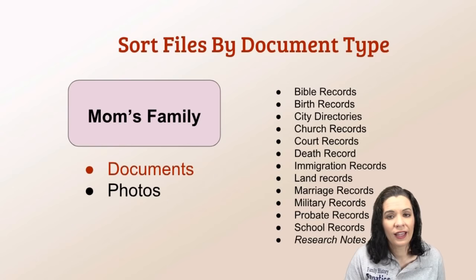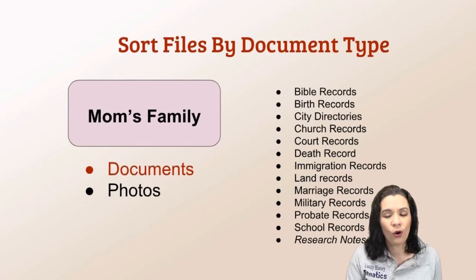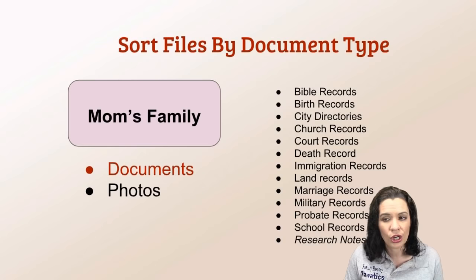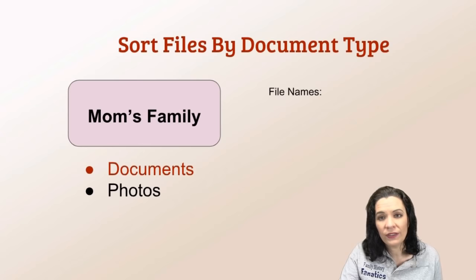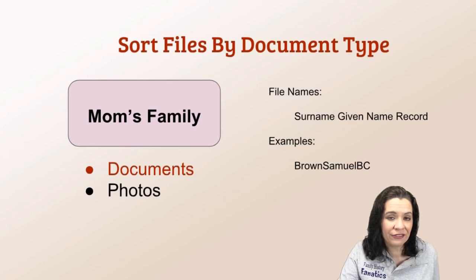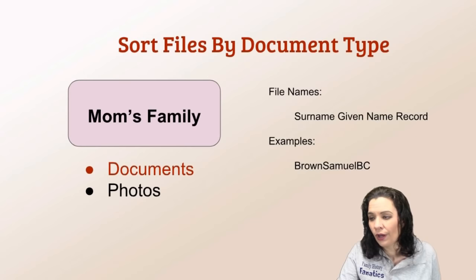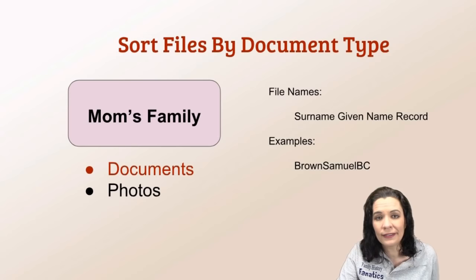Within the documents folder — under both mom's and dad's branches — I have subfolders by record type. So all the birth records are together, all the church records together, and so on. Then I name my files based on the key individual's surname and given name, followed by a record type code at the end. For example: Brown, Samuel, and then the type of record. I use codes like MC for marriage record, DC for death certificate, CD for city directory, and so on.